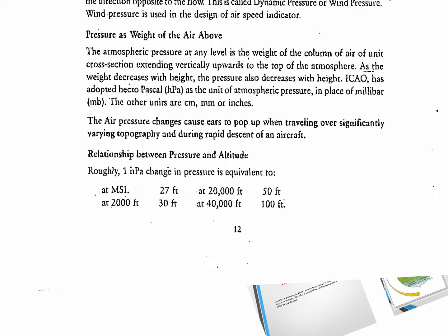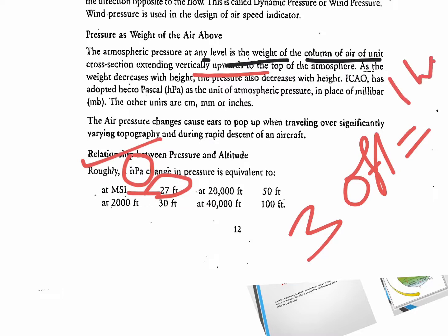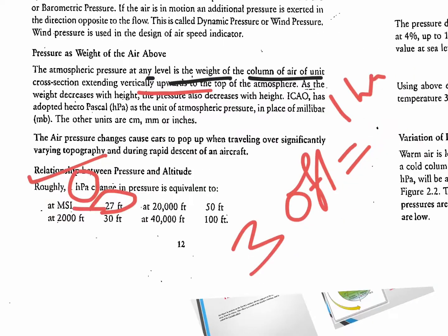According to ICAO, the atmospheric pressure at any level is the weight of the column of air of unit cross-section extending vertically up to the top of the atmosphere. Regarding the relationship between pressure and altitude: from sea level up to approximately 27–30 feet, one hectopascal of pressure change occurs. So for every 30 feet increase in height, pressure decreases by 1 hectopascal — this is an MCQ question.